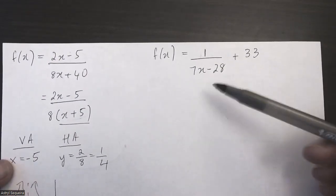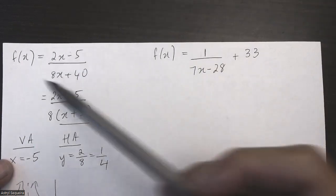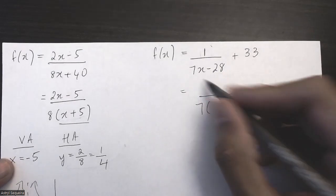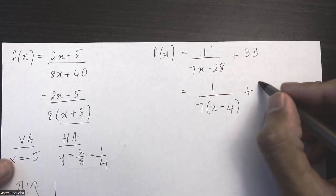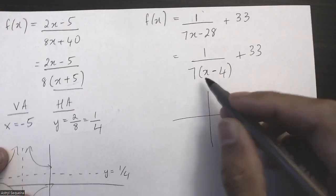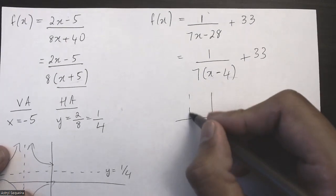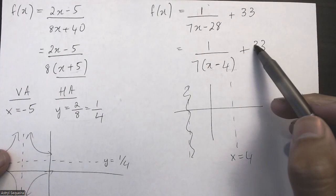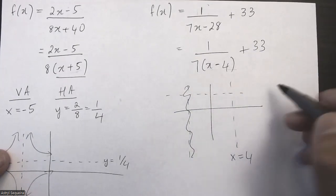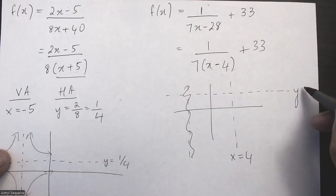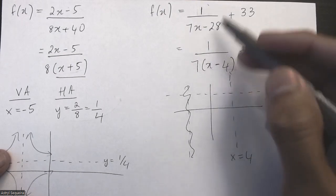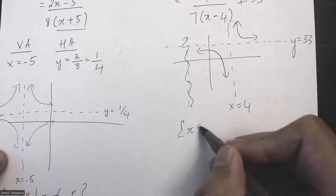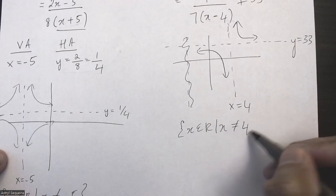The last function is a reciprocal function — a 1 over x type. Factor the denominator first: factor out 7 to get x minus 4. Sketching it out, the vertical asymptote is at x equals 4. The horizontal asymptote is the c value, which is 33. With no reflections, the graph sits in these two quadrants. The domain is x does not equal positive 4.